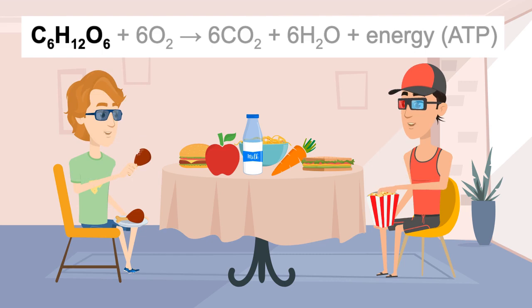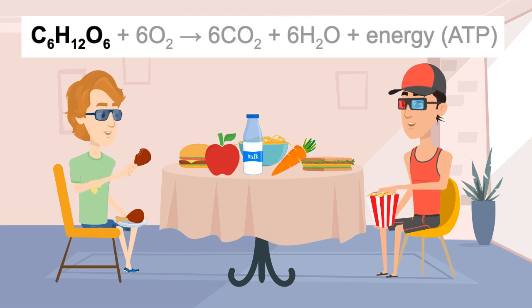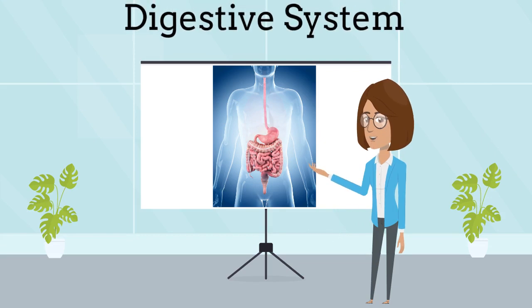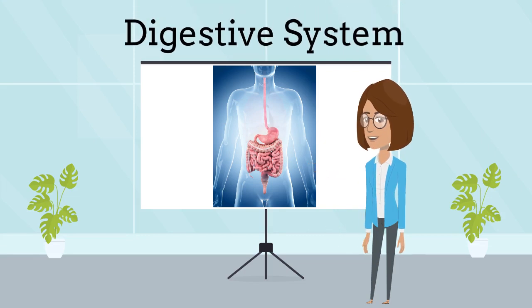The reactant glucose comes from the food we eat. When we eat, large molecules are broken down by the digestive system into glucose and other nutrients.